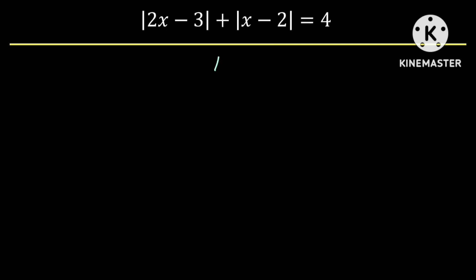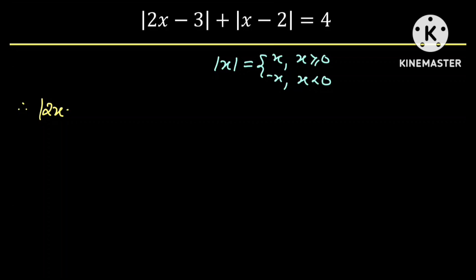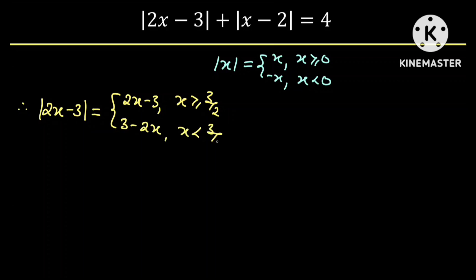Recall that the absolute value of x is equal to x if x is greater than or equal to zero, or negative x if x is less than zero. Therefore, the absolute value of 2x minus 3 is equal to 2x minus 3 if x is greater than or equal to 3/2, or 3 minus 2x if x is less than 3/2.